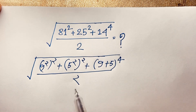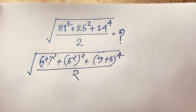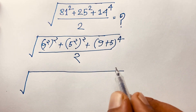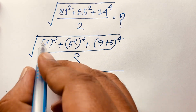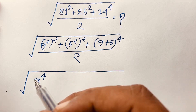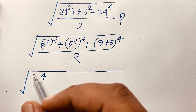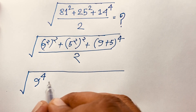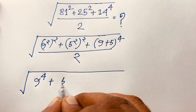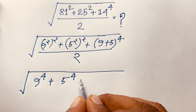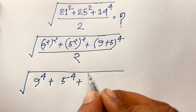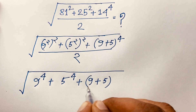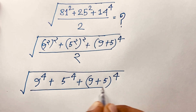Now we apply the exponential rule: a to the power n, whole to the power m, equals a to the power n times m. So 9 to the power 2 times 2 equals 9 to the power 4, and 5 to the power 2 times 2 equals 5 to the power 4. And we have plus 9 plus 5 bracket to the power 4 over 2.